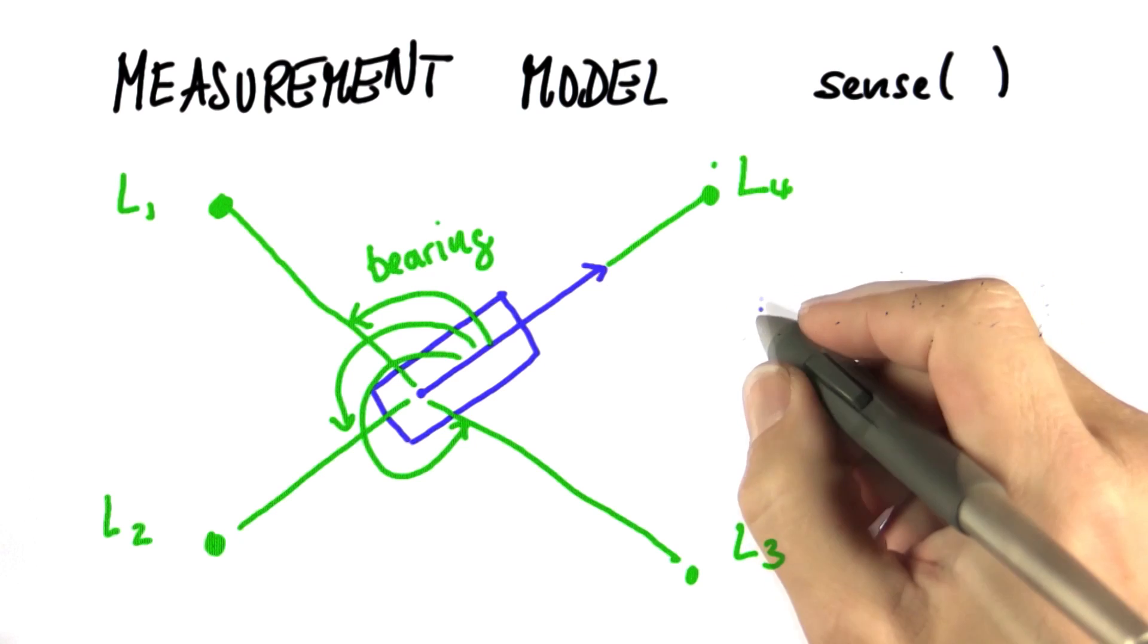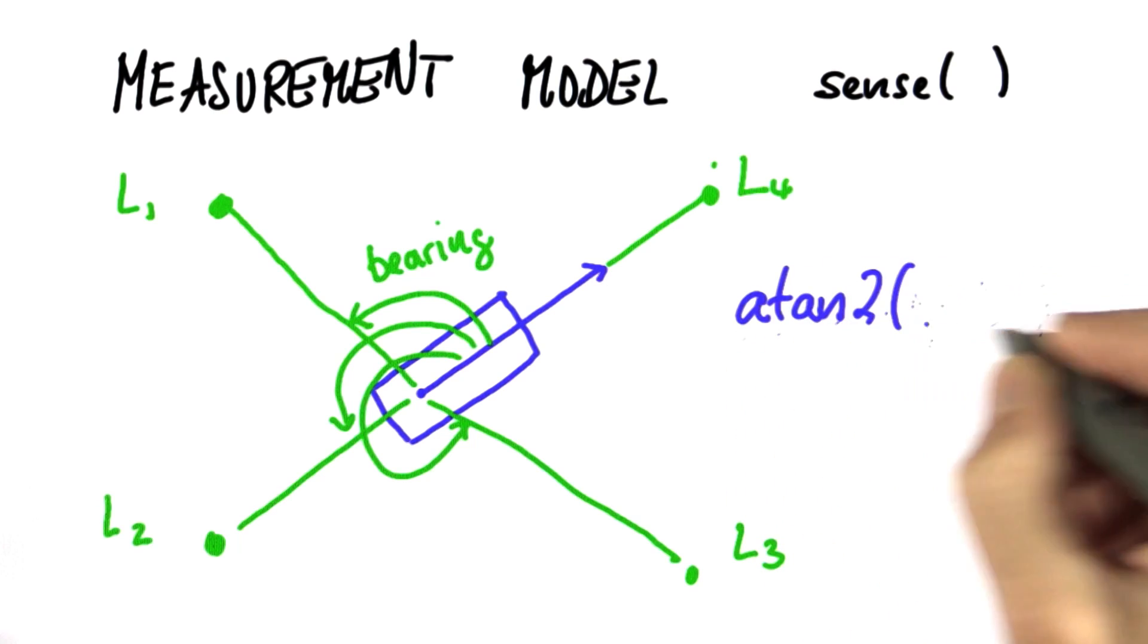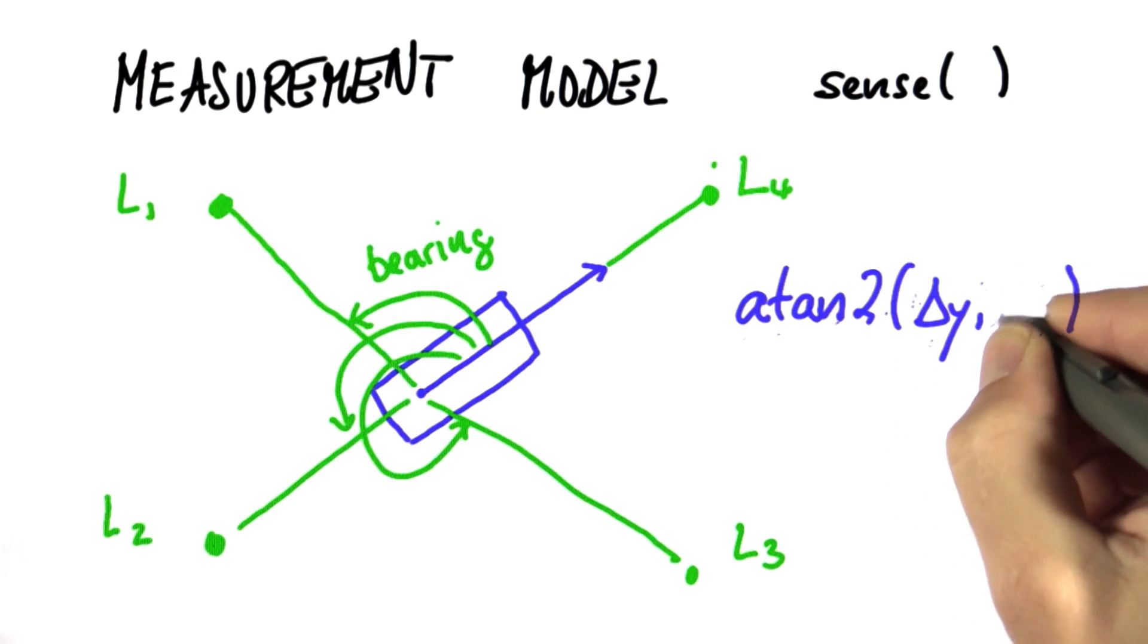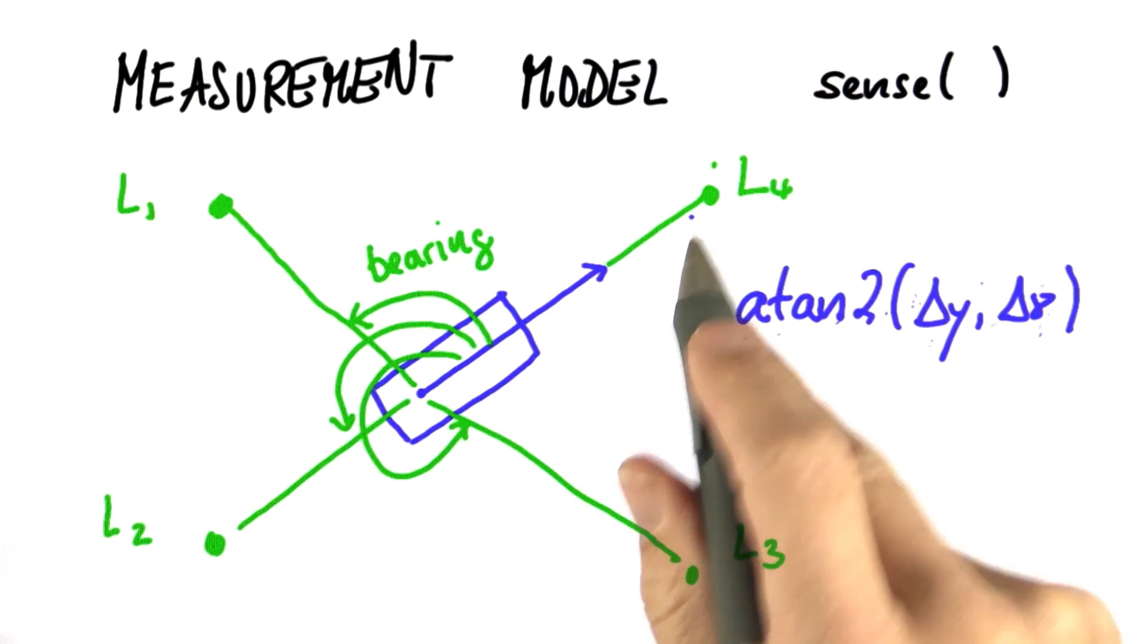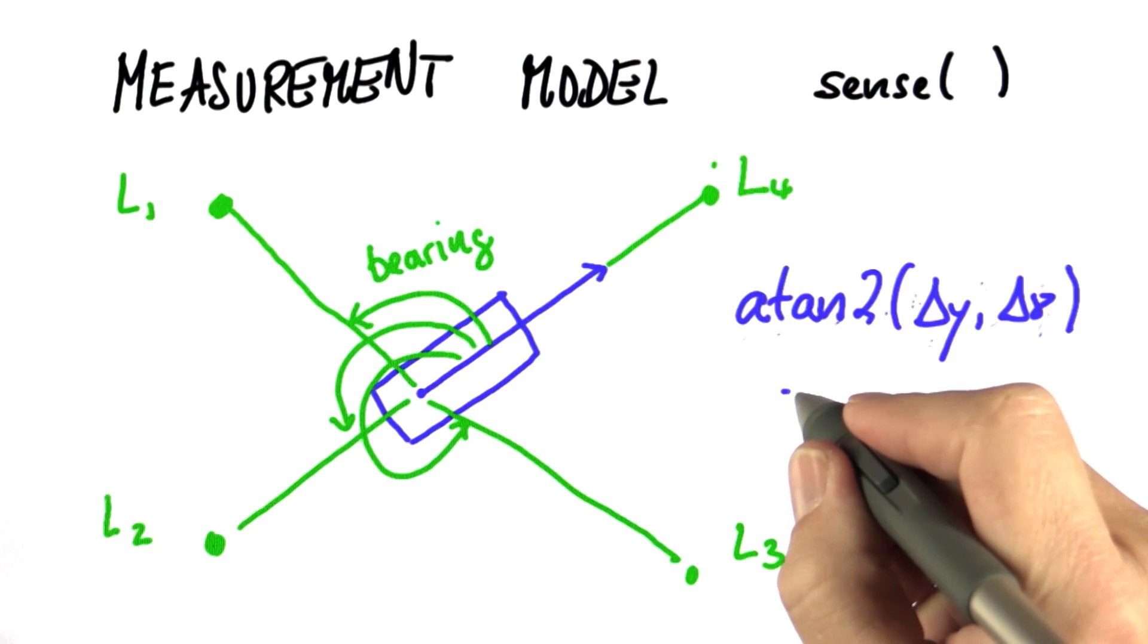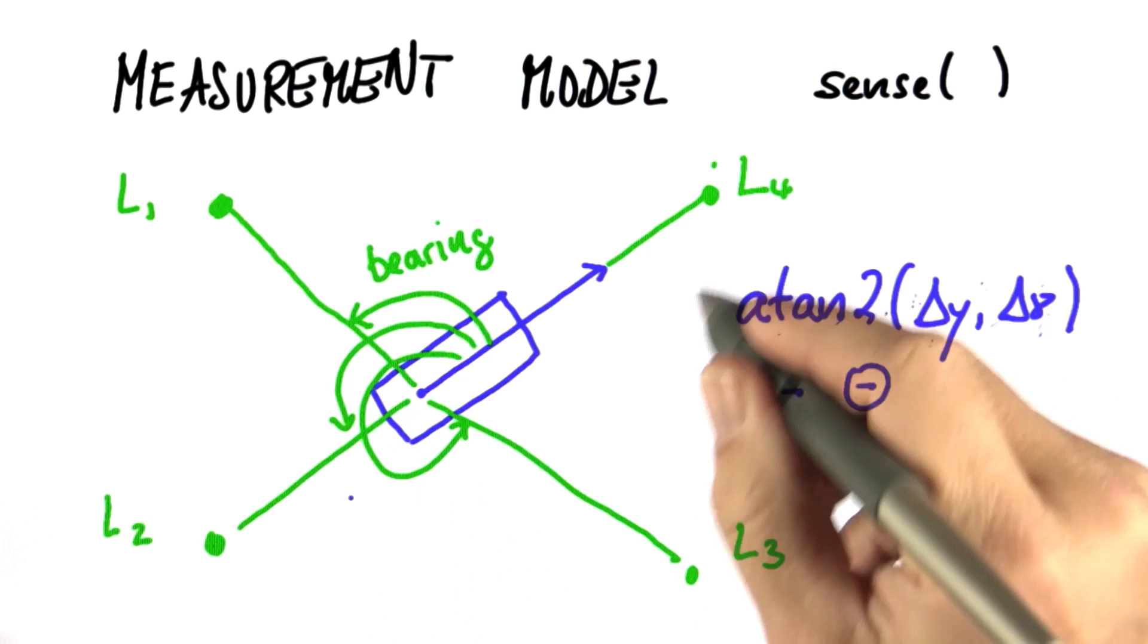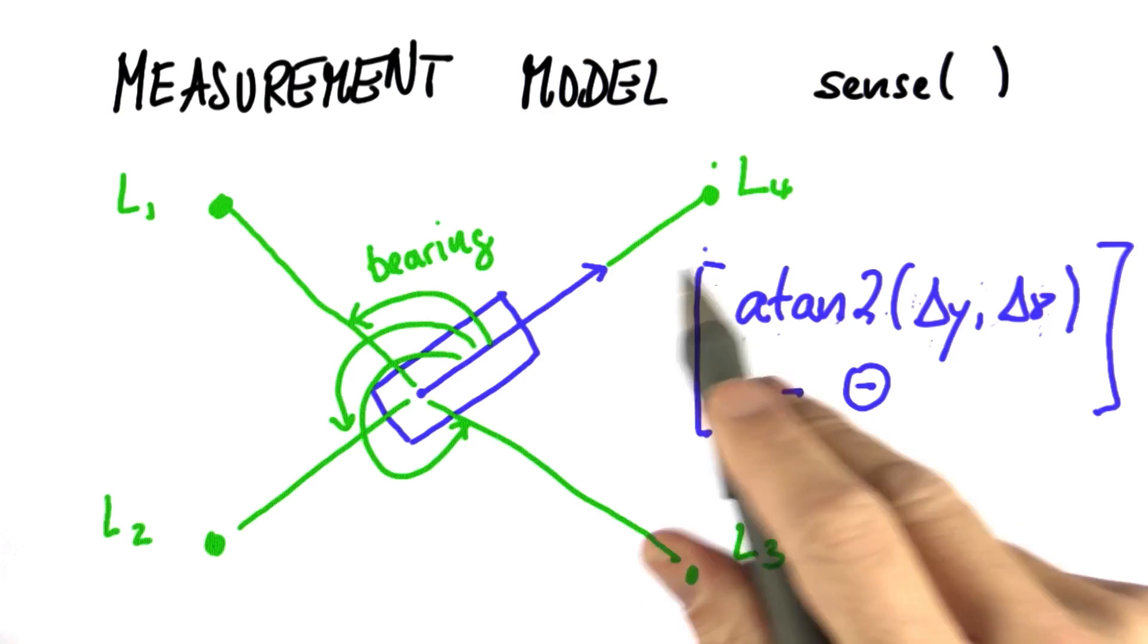So when you implement this, I recommend you use the function atan2, which is the generalization of arcus tangent, that takes as input a delta y and then a delta x. atan2 would give you the orientation of a vector in global coordinates. We then have to adjust for the fact that it's relative to the robot's local coordinates, which is done by subtracting the orientation of the robot. So this should give you the implementation of a bearing to a landmark.